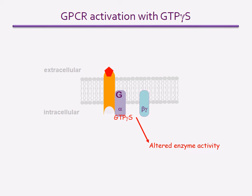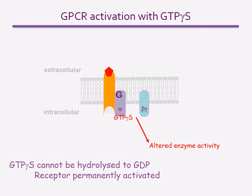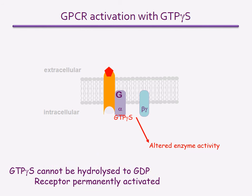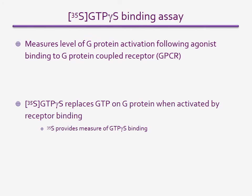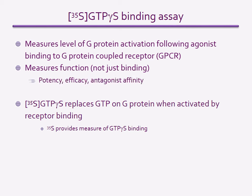This acts as a marker for agonist binding to the receptor and receptor activation. So by measuring the level of G protein activation following agonist binding, the GTP gamma-S assay therefore measures function, not just binding. The ability to increase GTP gamma-S binding indicates agonist action, while the ability to prevent an agonist from stimulating GTP gamma-S binding indicates antagonist action.